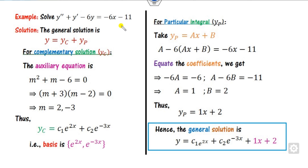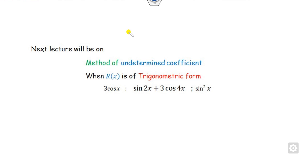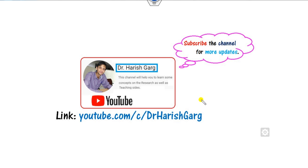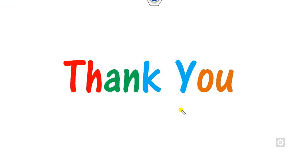This is the way you solve the method of undetermined coefficients when the right-hand side is a polynomial of any degree. In the next class we will see how to solve this method when the right-hand side involves sine, cosine, sine squared, and so on. Till then, follow this link for more mathematics videos. Best of luck, students.